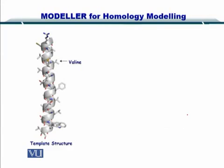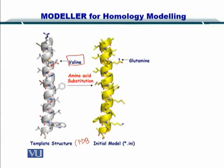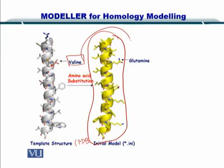What Modeler does for you is: if you have a template structure from the PDB and you have, let's say, an amino acid side chain here — valine — then it tries to substitute these amino acids by other amino acids such that the overall energy of the protein structure becomes minimized. As you can see in the yellow part, valine has been substituted by glutamine. You can see the side chain is different for valine and glutamine. This is your initial model, or INI file.